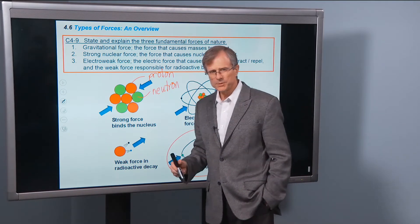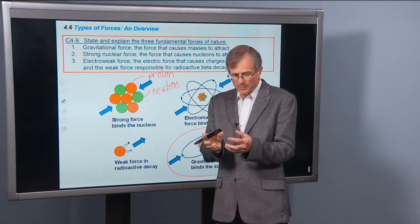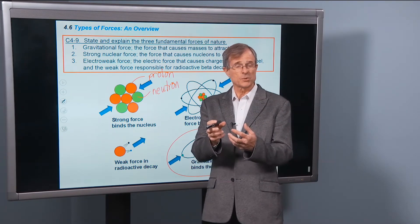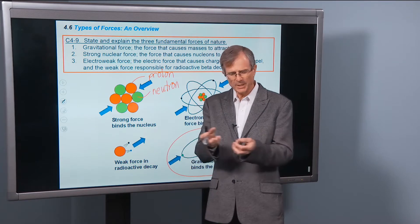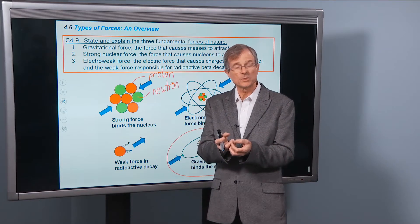The protons are all positively charged, and normally, being that like charges repel, two positive charges would normally repel each other. But yet they're very, very close together in the nucleus. What holds them together?